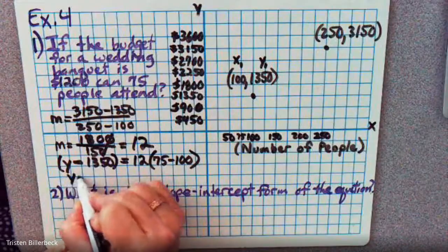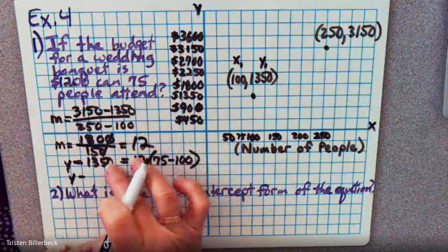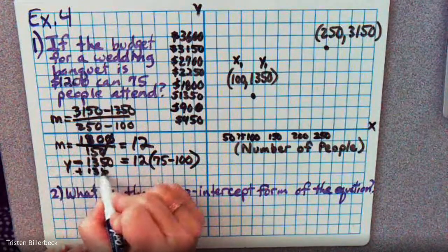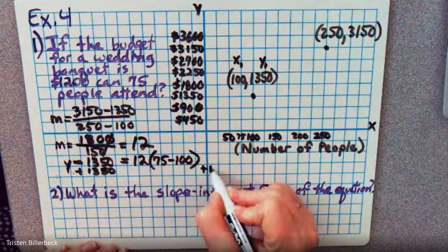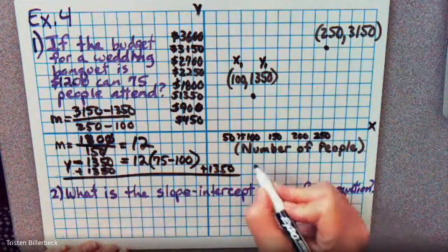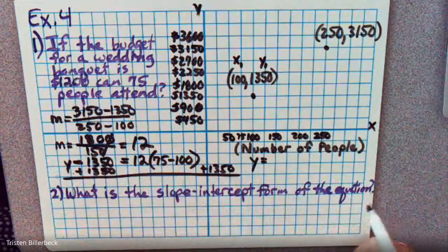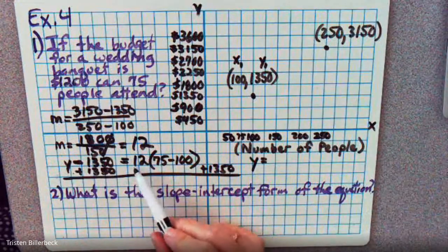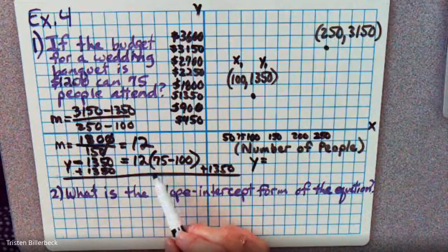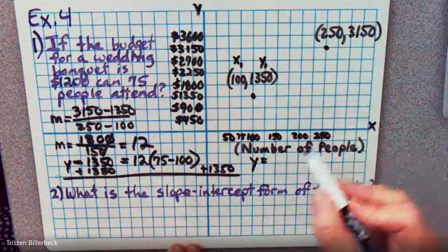So let's go ahead and add 1350 to both sides. So Y equals 12 times 75, which we can compute as 12 times negative 25 plus 1350 to make it easier.